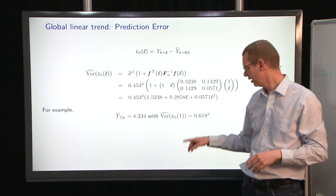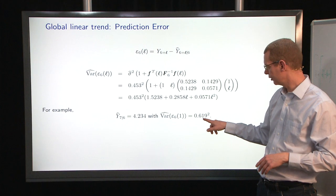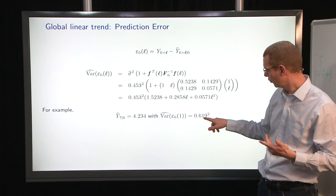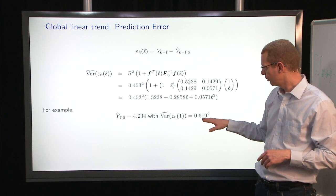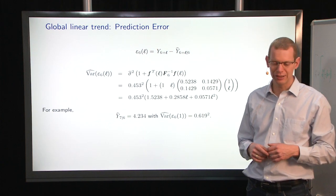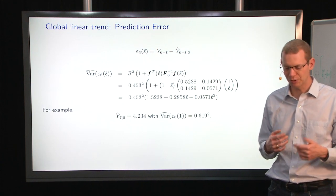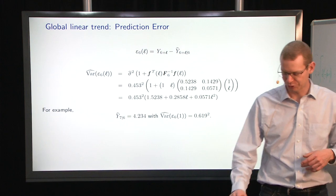If we want to do the one-step prediction error, then we get a variance that is 0.619 square. So we have a fairly, I wouldn't say large, but a reasonable increase in uncertainty.